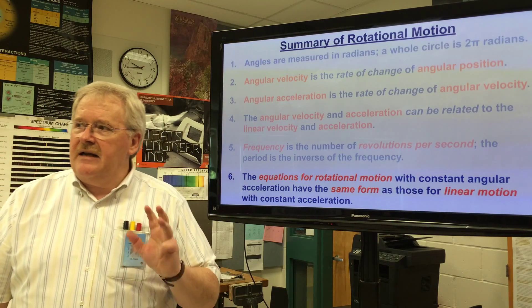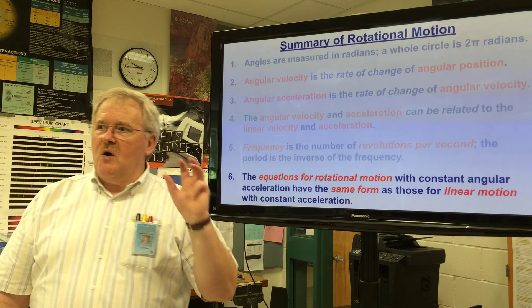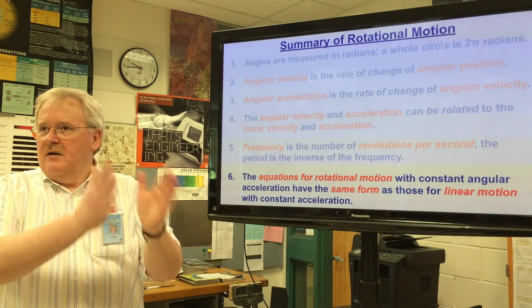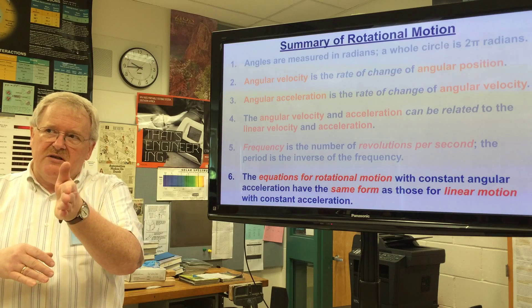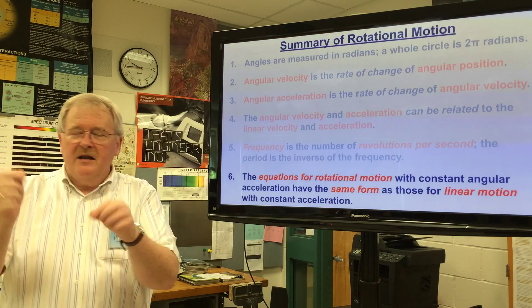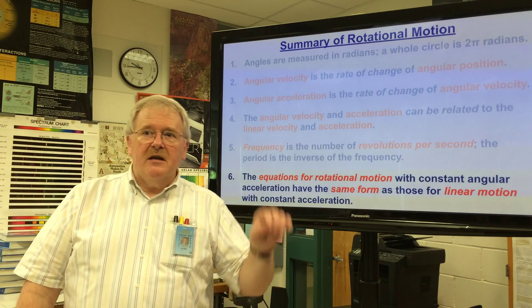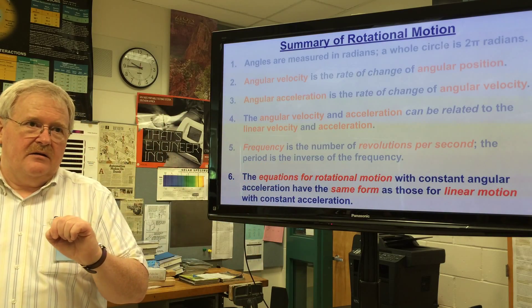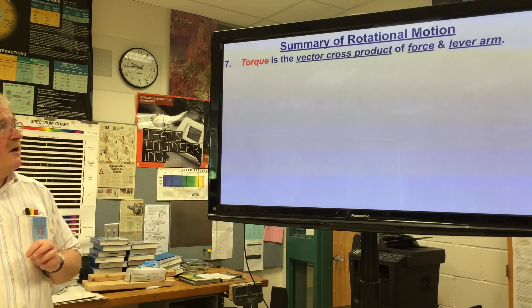The equations for rotational motion with constant angular acceleration have the same form as those for linear motion with constant acceleration. Remember when we were studying kinematics, in order for us to use those algebra based kinematics equations we had to have a constant acceleration. If we didn't, we had to break the problem up into two parts or three parts depending on how many times the acceleration changed, and assume that we had some sort of discontinuity where it went dramatically in an infinitesimal amount of time from one to the other. That of course is not physically realistic, but it helps us keep the problem simple. If we use calculus, we can actually take into account that slow real change from one acceleration to another.